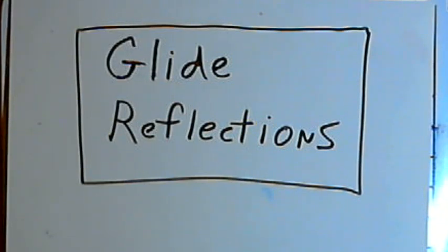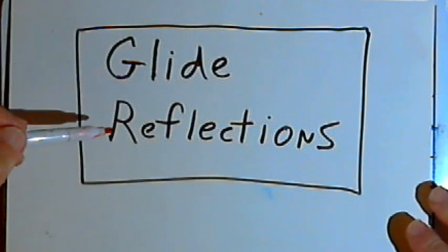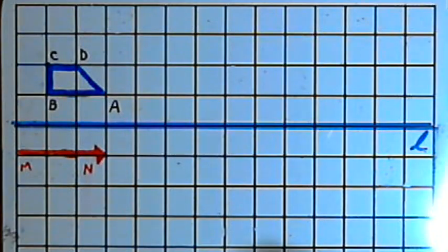This video is provided as supplementary material for courses taught at Howard Community College. In this video I'm going to talk about glide reflections. A glide reflection is really just a combination of a translation followed by a reflection.